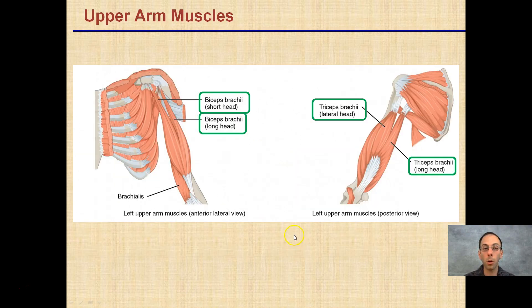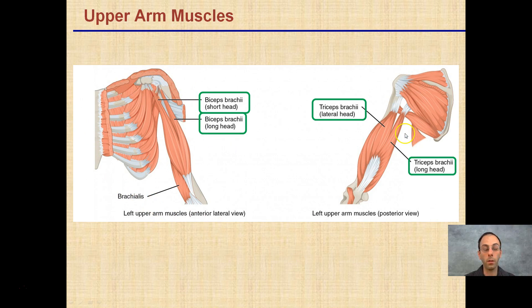Upper arm muscles are biceps and triceps. Biceps have two points of origin, triceps have three. Be able to recognize where each of these are located. Keep in mind our anterior view is here on the left, and our posterior view is here on the right.